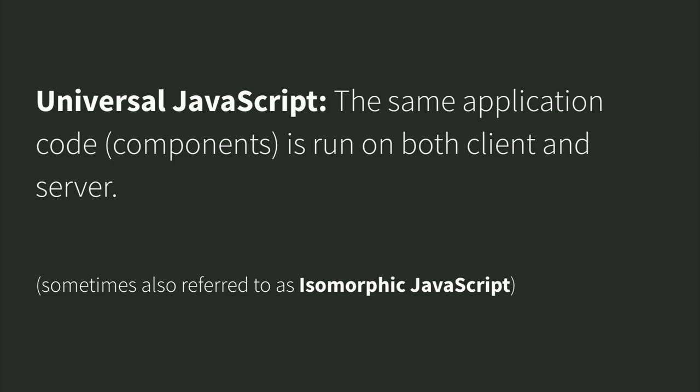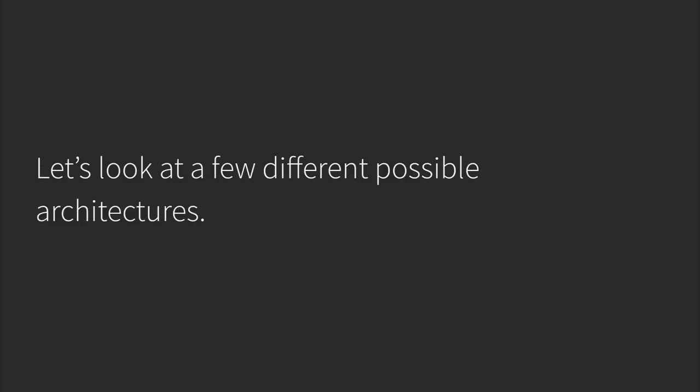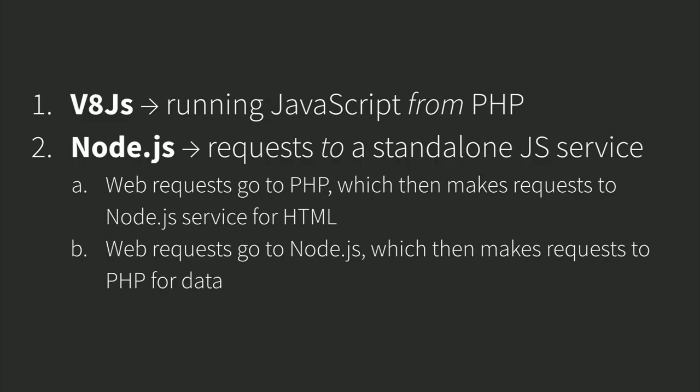This presents a challenge: the same application code needs to run on both the client and the server. This pattern is referred to as universal JavaScript — sometimes also called isomorphic JavaScript. That same JavaScript code is run on both client and server. We need a way to execute JavaScript on the server for this to work. How are we going to do that if we have a PHP application? There are a few different possible architectures, and I'll cover them — depending on your tech stack and goals, they may inform your choices.